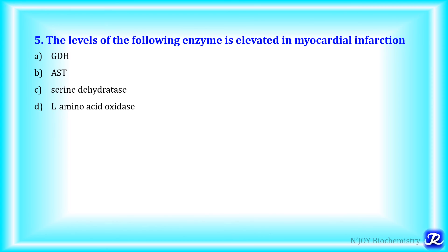MCQ 5: The level of which enzyme is elevated in myocardial infarction? Option 1: glutamate dehydrogenase; option 2: aspartate transaminase; option 3: serine hydratase; option 4: L-amino oxidase. In myocardial infarction, the level of aspartate transaminase is increased. The answer is option B — AST, aspartate transaminase, which is also called SGOT, serum glutamate oxaloacetate transaminase.